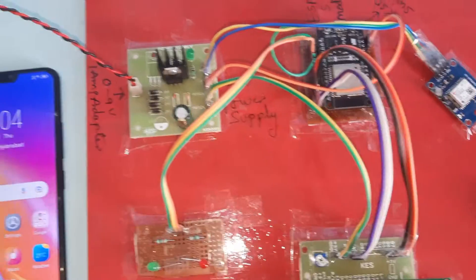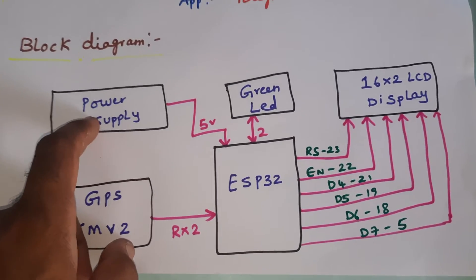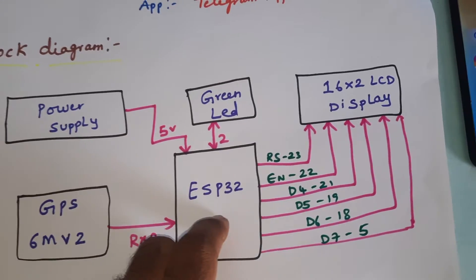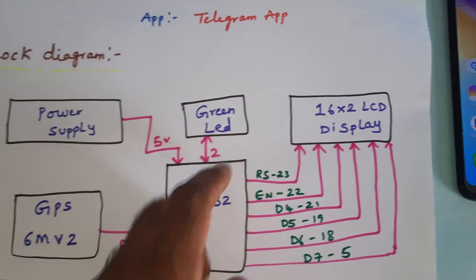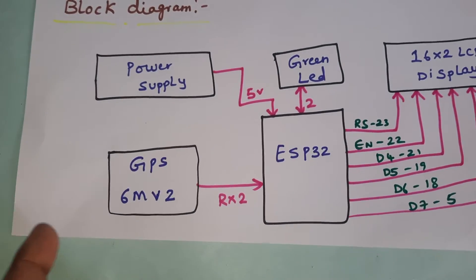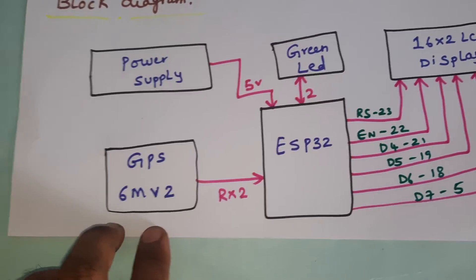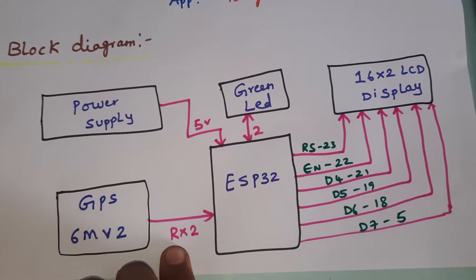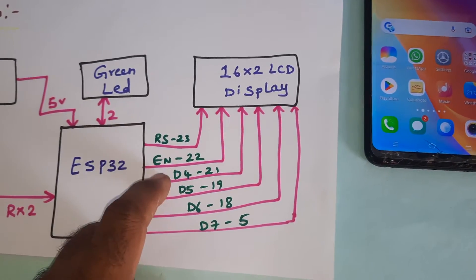When you press the Track button, you will get the latitude and longitude, but it requires a mobile hotspot and internet. Components needed: Telegram app, 5-volt power supply (0–9V adapter producing 5V), ESP32S NodeMCU board, one red LED and one green LED. The green LED activates on click, then goes red. The GPS module is GY-6M V2, connected via serial communication. The 16x2 LCD display is connected with RS, Enable, D4, D5, D6, D7 on GPIO pins 23, 22, 21, 19, 18, and 5.